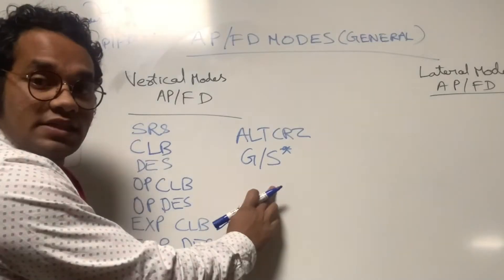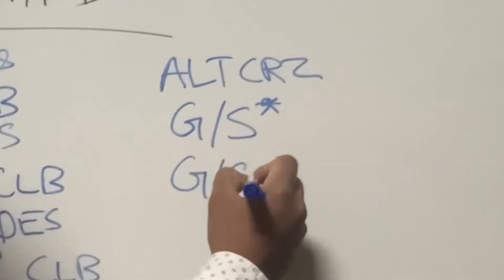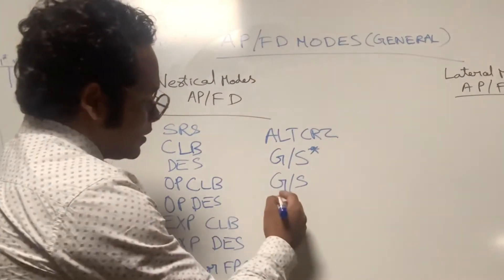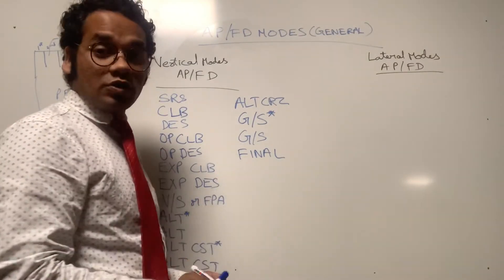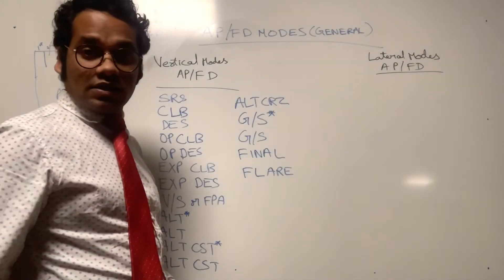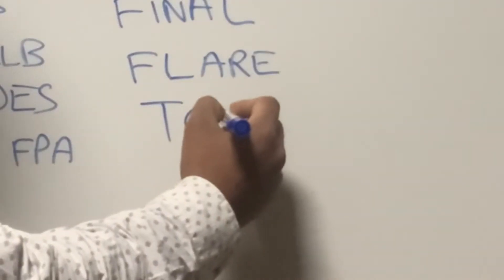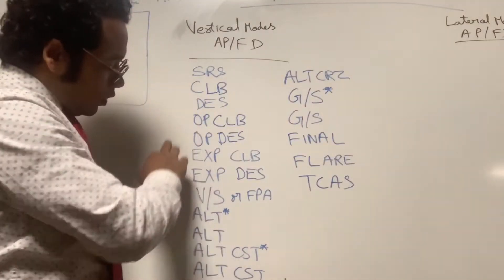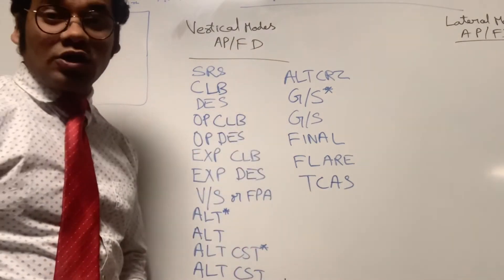Next is GS*, which means glide slope capture mode, and GS on its own means glide slope track mode. After that is FINAL mode, which appears only in case of a non-precision approach. FLARE means the flare mode, which appears during autoland. In some MSN numbers we also have TCAS, which means the aircraft is in TCAS mode. Those are all the vertical mode FMAs for the second column.